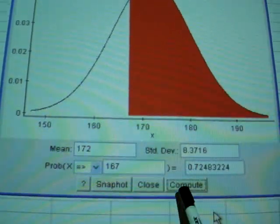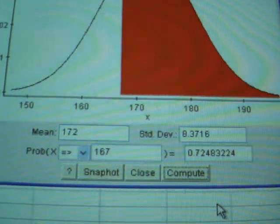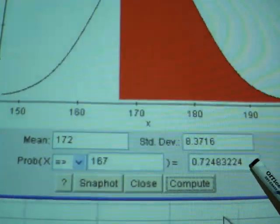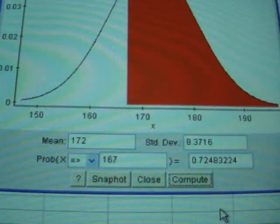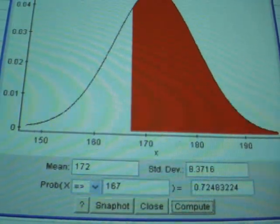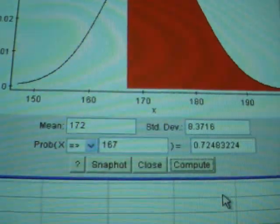So 0.7257, 0.7248, almost exactly the same. This is a little more accurate, but I'm not sure exactly the way that MyStatLab wants that. So that will do it for this one.